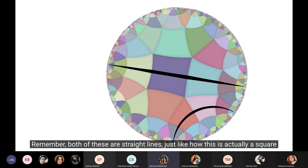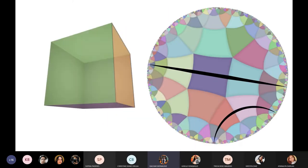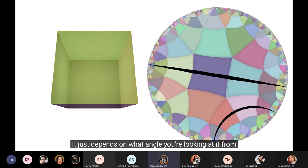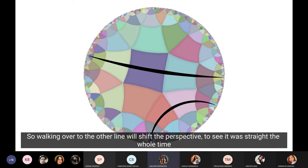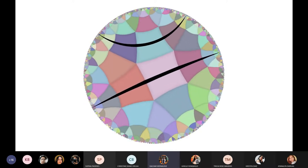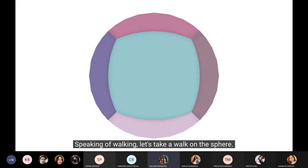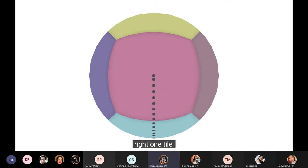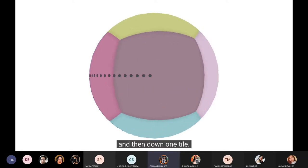And remember how everything hyperbolic is the opposite of spherical? Well, in hyperbolic space, lines will always diverge. Remember, both of these are straight lines, just like how this is actually a square. It just depends on what angle you're looking at it from. So walking over to the other line will shift the perspective to see it was straight the whole time. Speaking of walking, let's take a walk on the sphere. Let's walk up one tile, right one tile, and then down one tile.